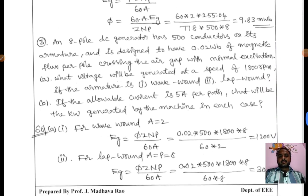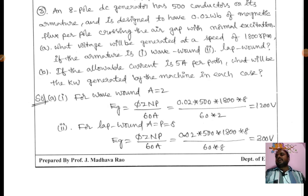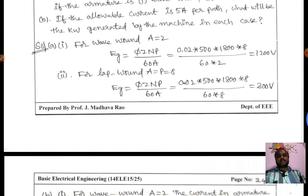One more problem: An 8-pole DC generator has 800 conductors on its armature and is designed to have 0.02 webers of magnetic flux per pole crossing the air gap with normal excitation. (a) What voltage will be generated at a speed of 1800 rpm if the armature is wave wound? (b) Lap wound? If the allowable current is 5 amperes per path, what will be the kW generated by the machine in each case?